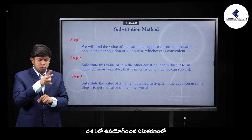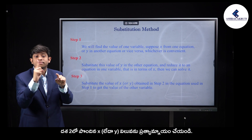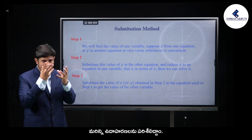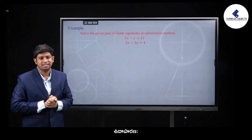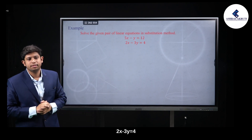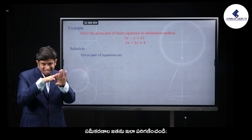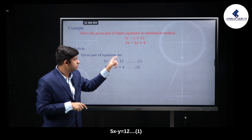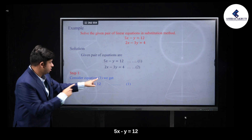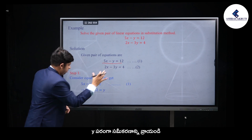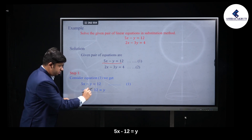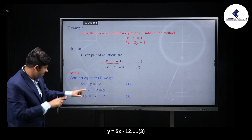Example 1: Consider the pair of equations — 5x minus y is equal to 12, and 2x minus 3y is equal to 4. From the first equation, express y: y is equal to 5x minus 12. This becomes equation 3.